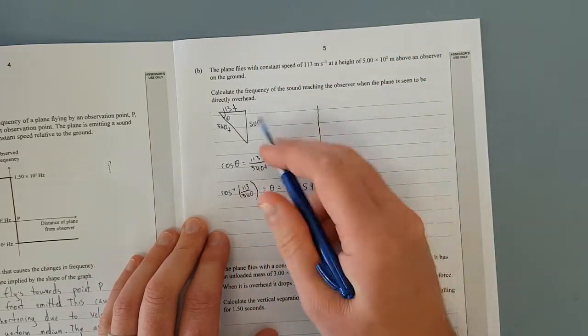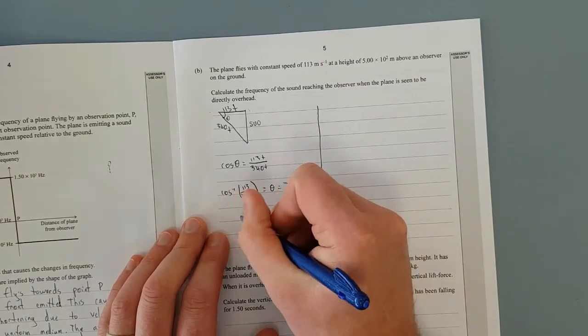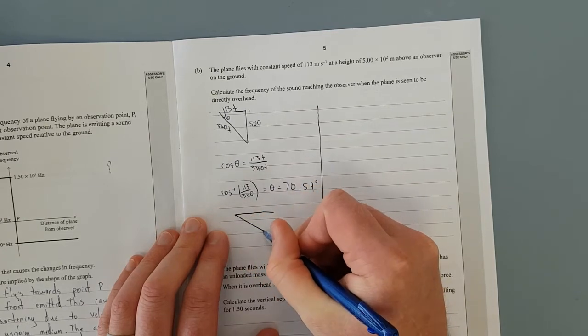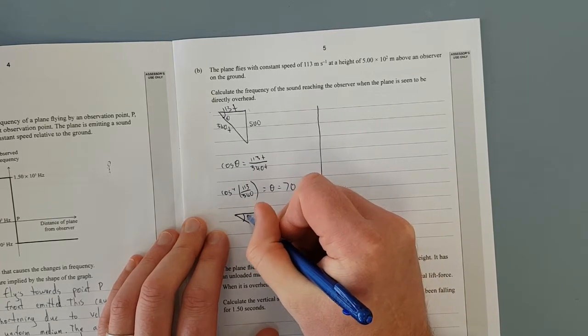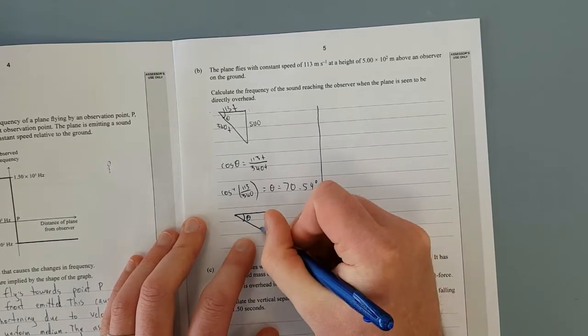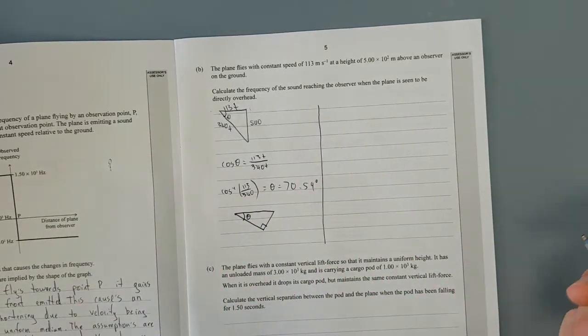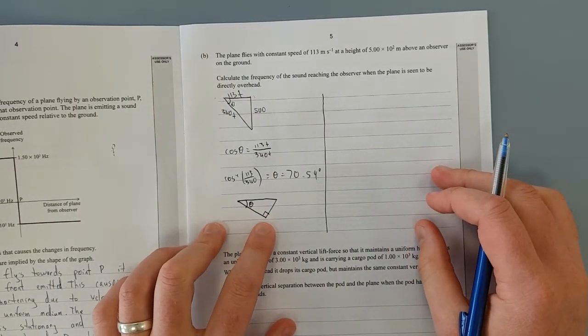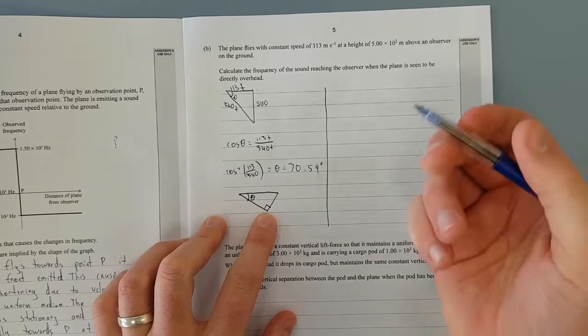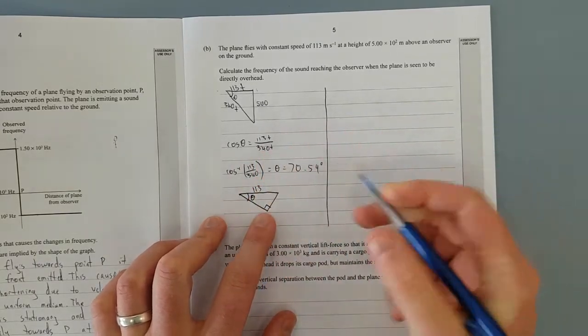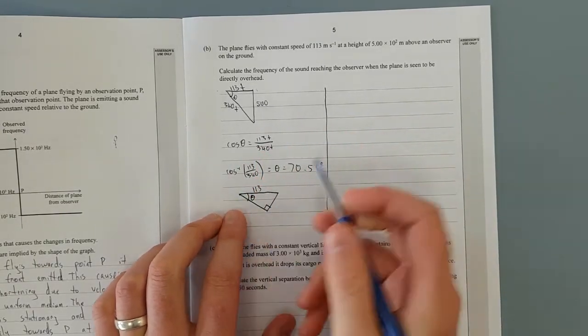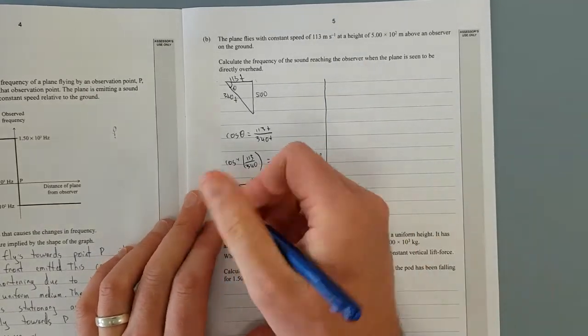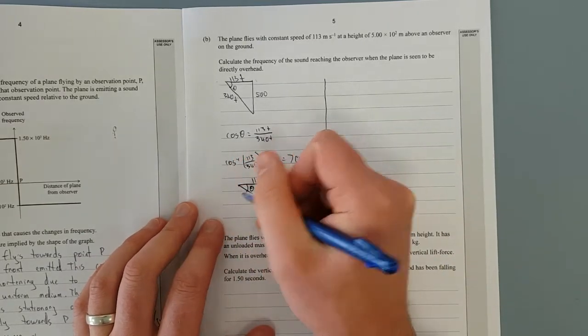So rule of thumb is the fastest the plane can really ever go is 113 metres per second so that's going to be your hypotenuse. Now we draw our other two components of the triangle, this here being 70 degrees. It's easy just to memorise the largest is always the hypotenuse which is always whatever you're given generally speaking.